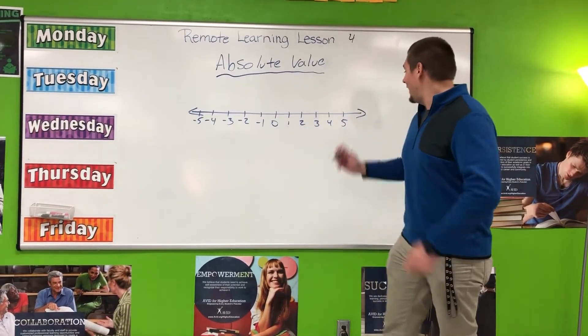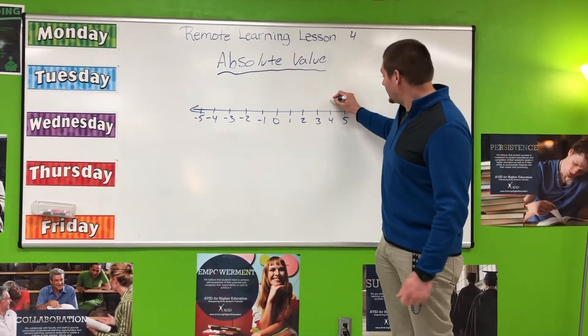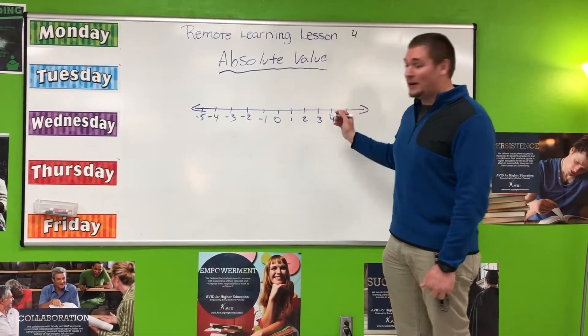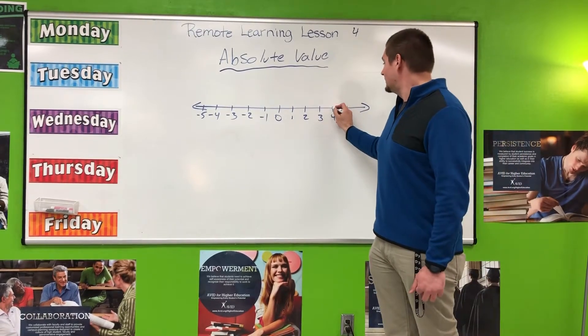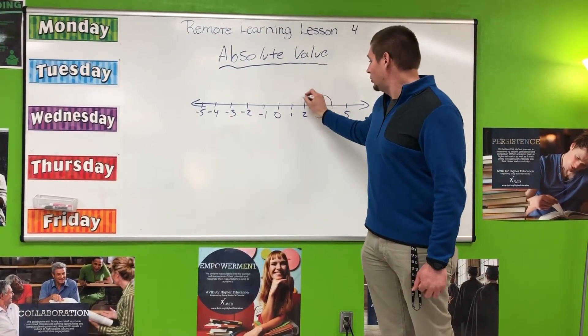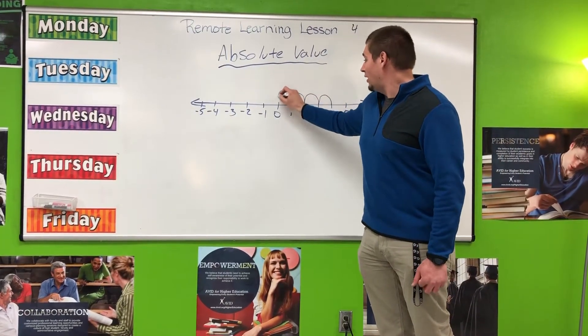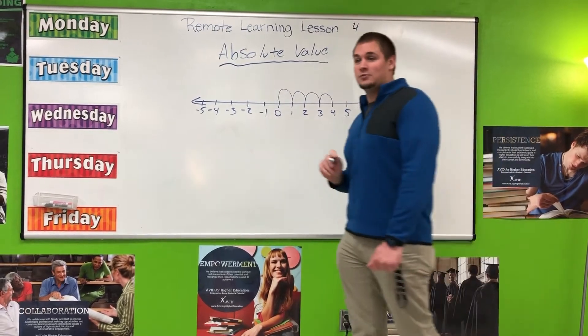So if I am at a positive four, you have to think to yourself: how many hops or jumps do I have to make to get to zero? It is one, two, three, and four. It is four spots away from zero.